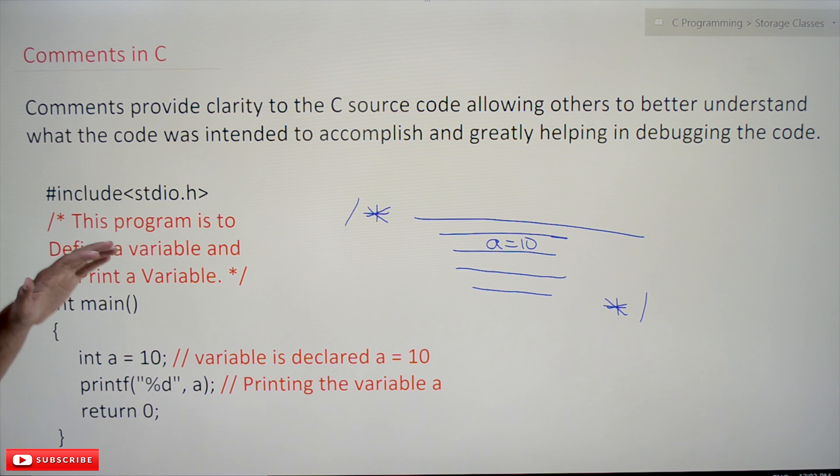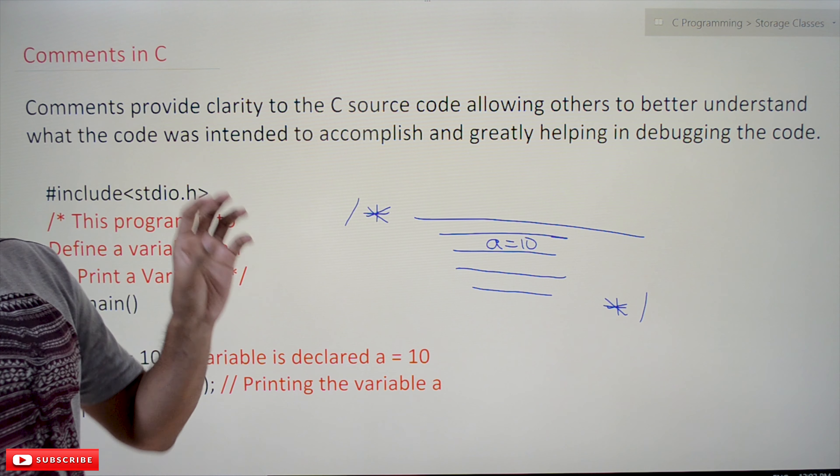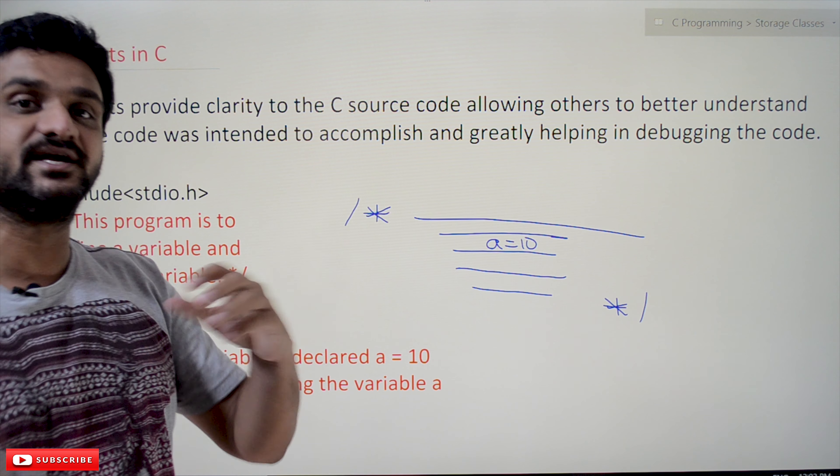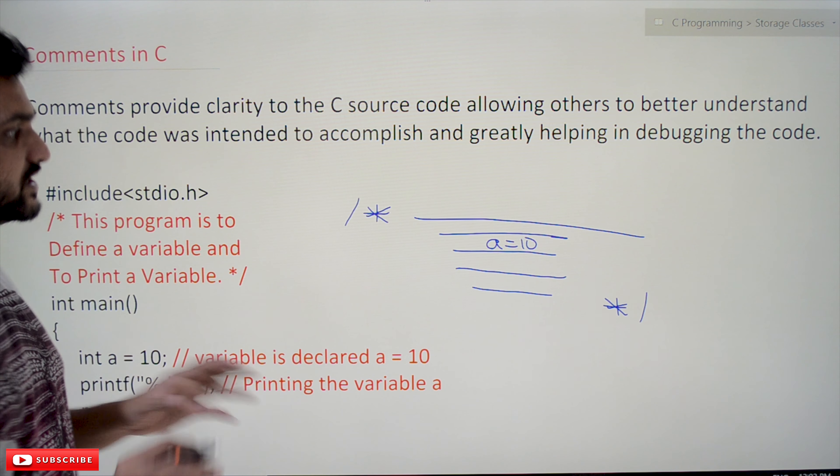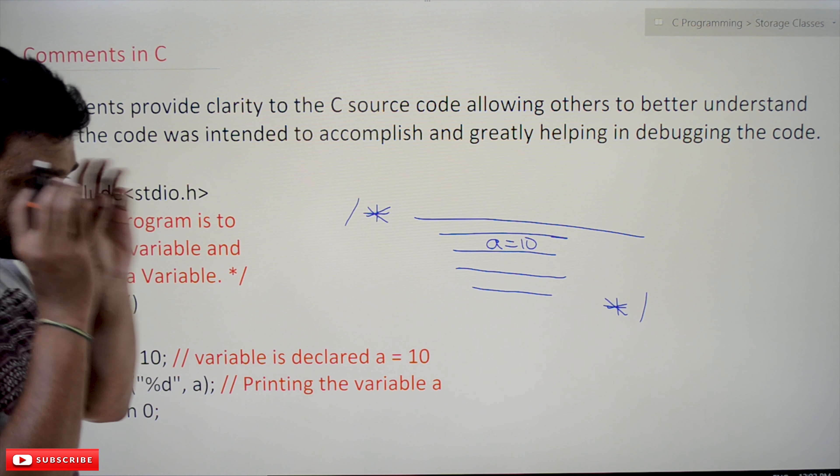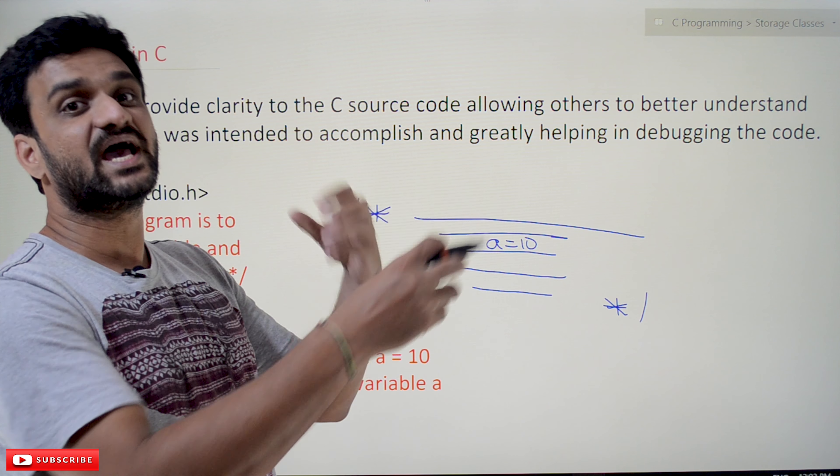What happens is whenever the program is given to the compiler, all the comments are removed first, and later the execution will start. So comments are only to make the third-party person understand what's happening in this program.